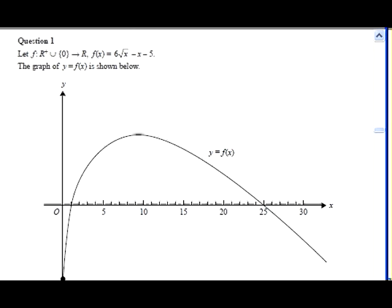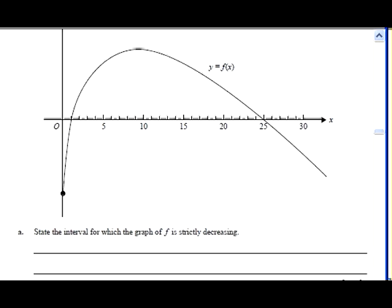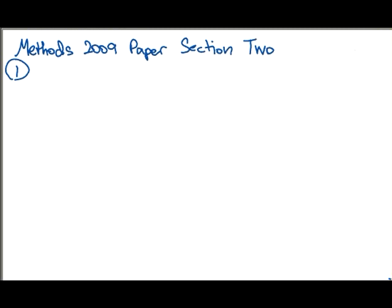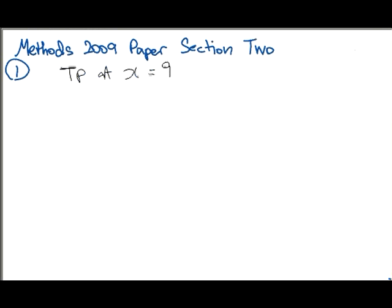You've got a graph, a function f(x) = 6√x - x - 5, and it's looking like this curve here. This is not a difficult looking function, I know all the parts that make it up. First part, state the interval for which the graph is strictly decreasing. First thing you can do is put the thing into your calculator, and you'll discover that there's a turning point at x = 9. This point here where it turns is x = 9. You should all know how to do this on your calculator. Really easy.